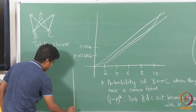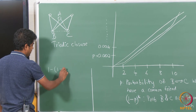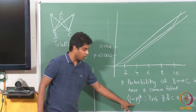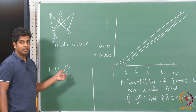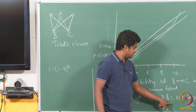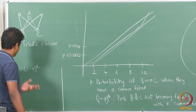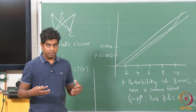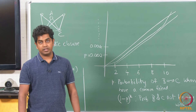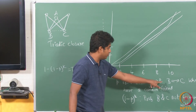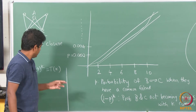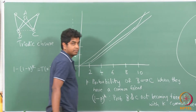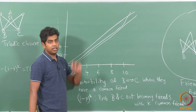Then 1 − (1 − P)^k denotes the probability of that not happening — i.e., the probability of B and C becoming friends given k common friends. We denote this as t(k). For an appropriate value of P, this curve fits the straight line observed in the real-world data set.